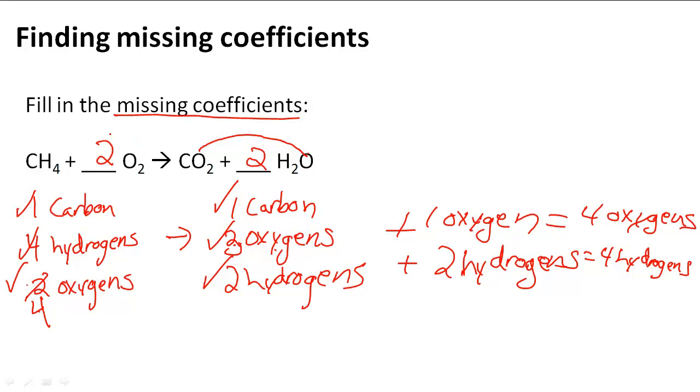The missing coefficients were both 2—a 2 here and a 2 here. If you make a mistake, you can go back and try again. Make sure you count all the oxygens, hydrogens, and carbons, and make sure the equation actually balances out.